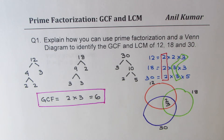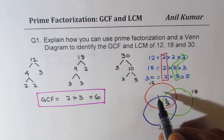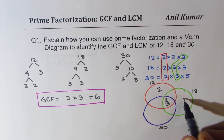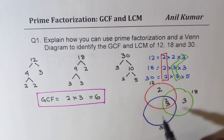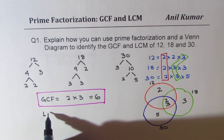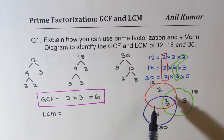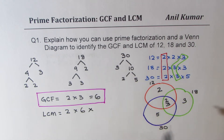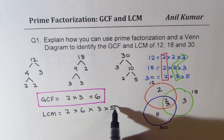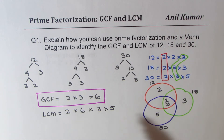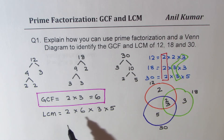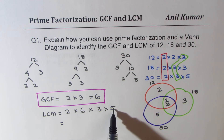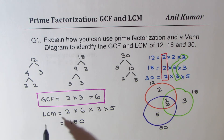Now let's fill in the remaining numbers. For 12, one 2 is left, so it goes in the 12-only region. For 18, one 3 is left. For 30, the factor 5 remains. To find the lowest common multiple, we multiply all the factors in the Venn diagram: 2×3 (the common center) times 2 times 3 times 5 equals 6×3×5×2 = 180. So LCM is 180.